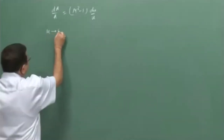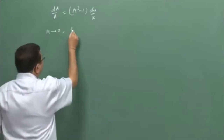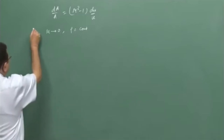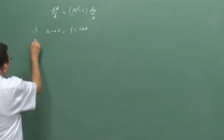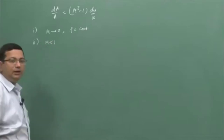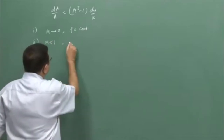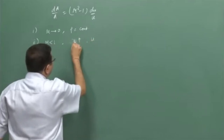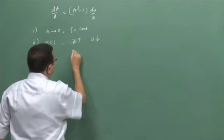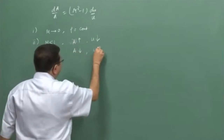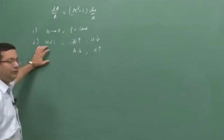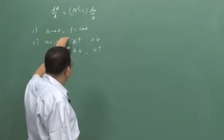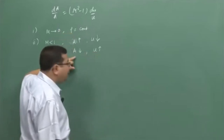If Mach number is very small, tending to 0, we have shown that density is constant, so we have an incompressible flow. Then we have shown that if the flow is subsonic, as area increases, velocity will decrease, and as area decreases, velocity will increase. So for a subsonic flow, a diffuser needs to have an increasing area and a nozzle needs to have a converging passage.